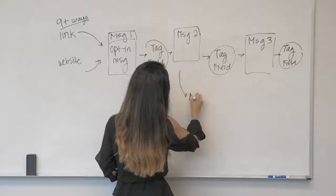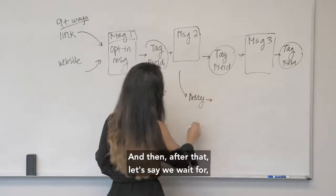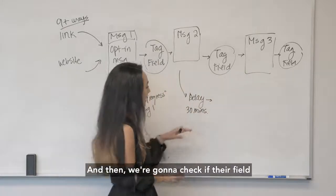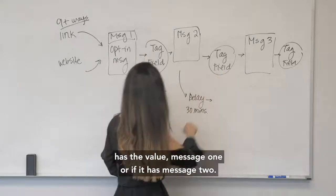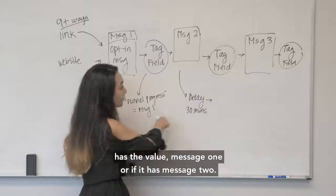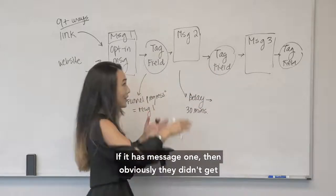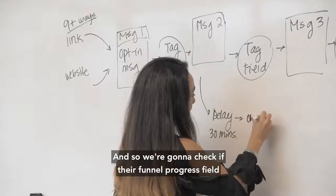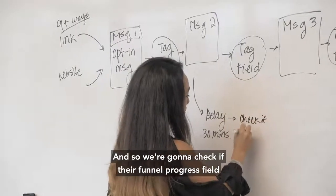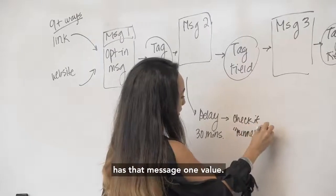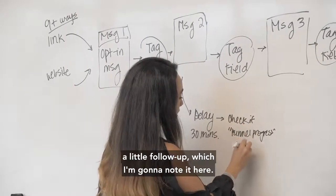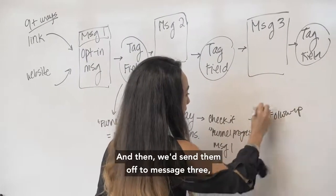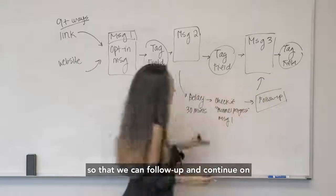What you would do is after message two we're going to have a little delay. Then after that, let's say we wait—I usually wait 15 to 30 minutes with something like lead gen—and then we're going to check if their field has the value message one or if it has message two. If it does have message two that means they moved on; if it has message one then obviously they didn't get a chance to complete message two. So we're going to check if their funnel progress field has that message one value, and if it does then we're just going to send them a little follow-up and then we'd send them off to message three so that we can follow up and continue on with the last part of the message.